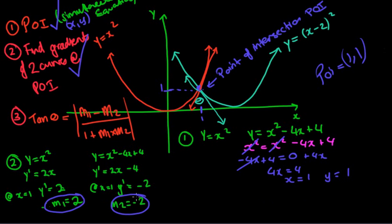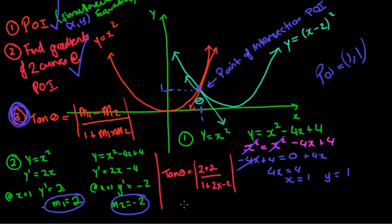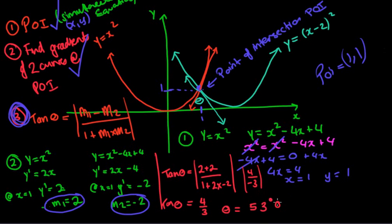Now the third step: putting the values into the formula. Tan θ equals the absolute value of (m1 minus m2) over (1 plus m1 times m2), which is the absolute value of (2 minus minus 2) over (1 plus 2 times negative 2) — that's 4 over (1 minus 4) equals 4 over negative 3. Taking the absolute value gives 4/3. Using shift-tan on the calculator gives an angle of 53 degrees and 8 minutes.